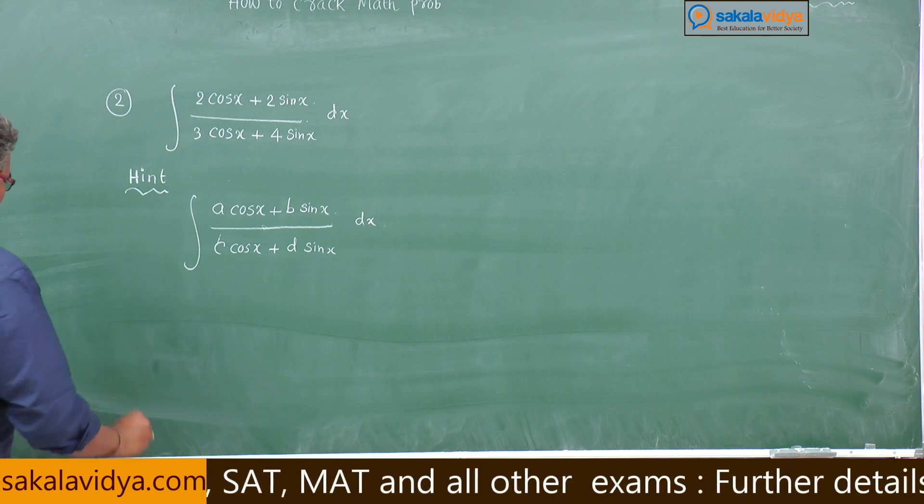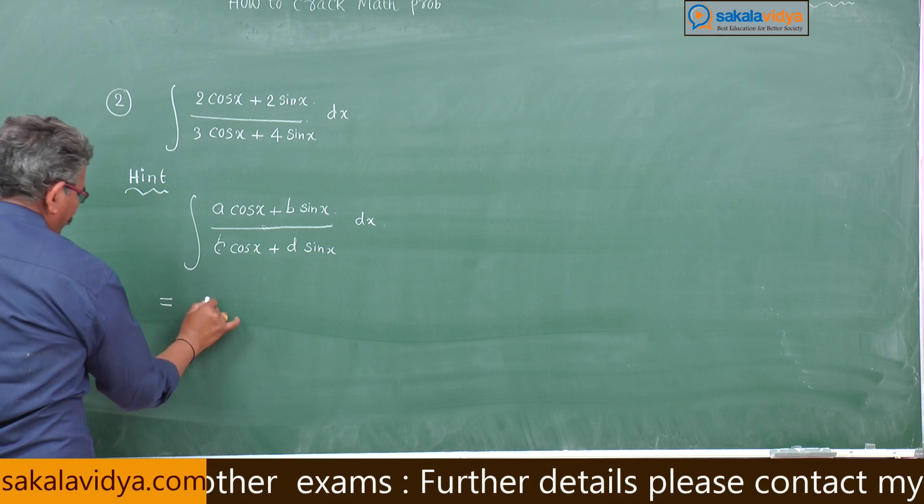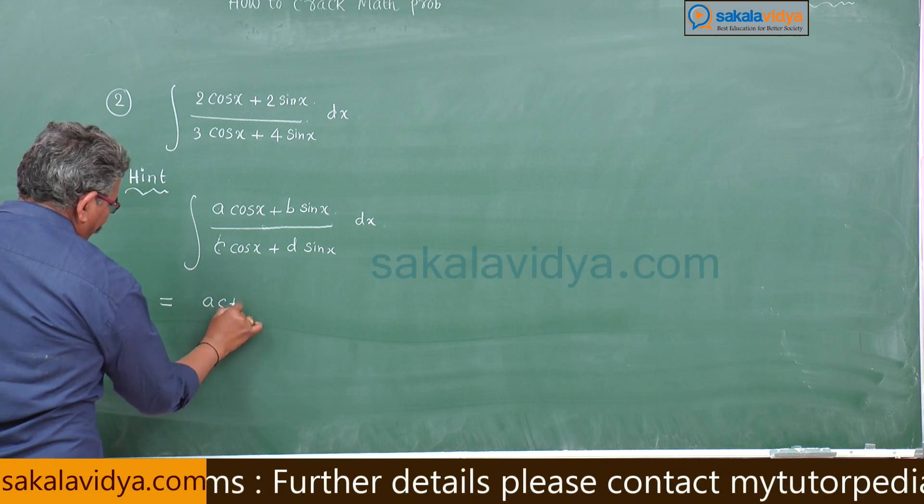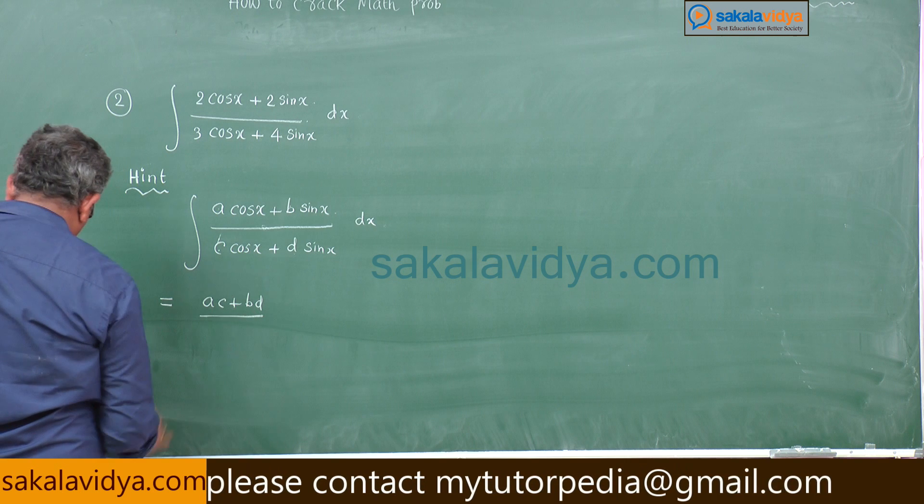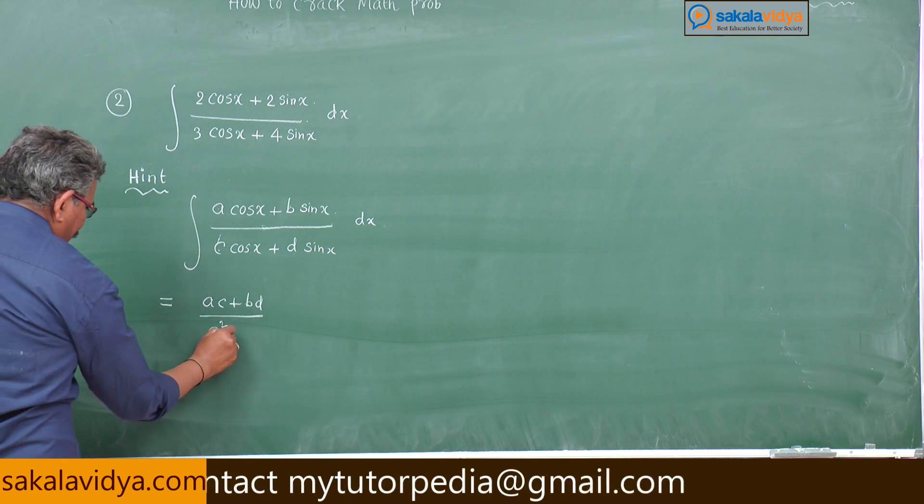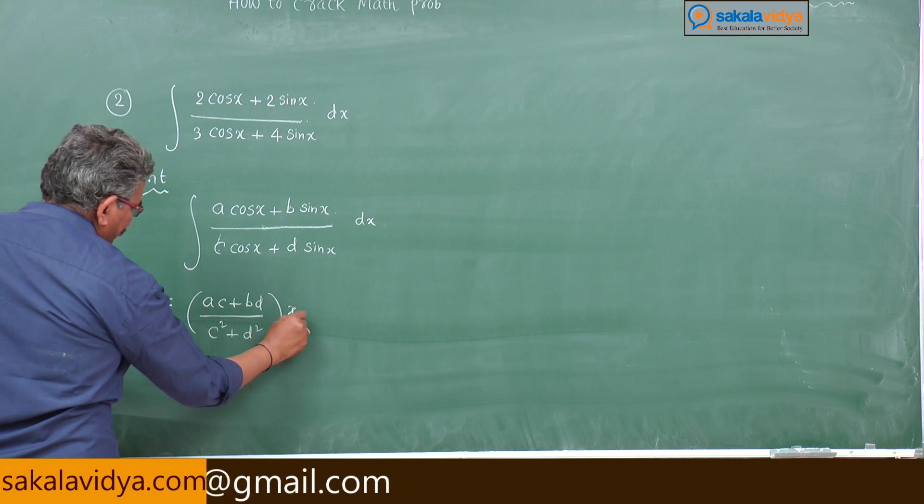Now this equals A into C plus B into D by C square plus D square of x plus...